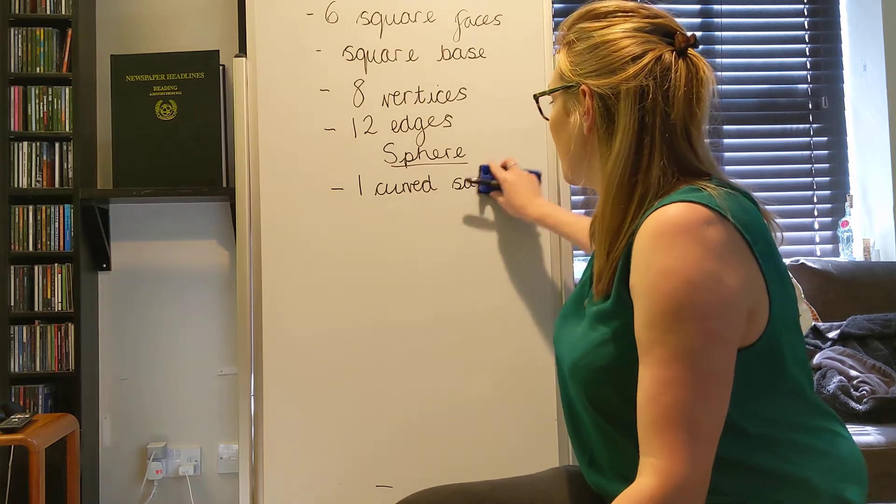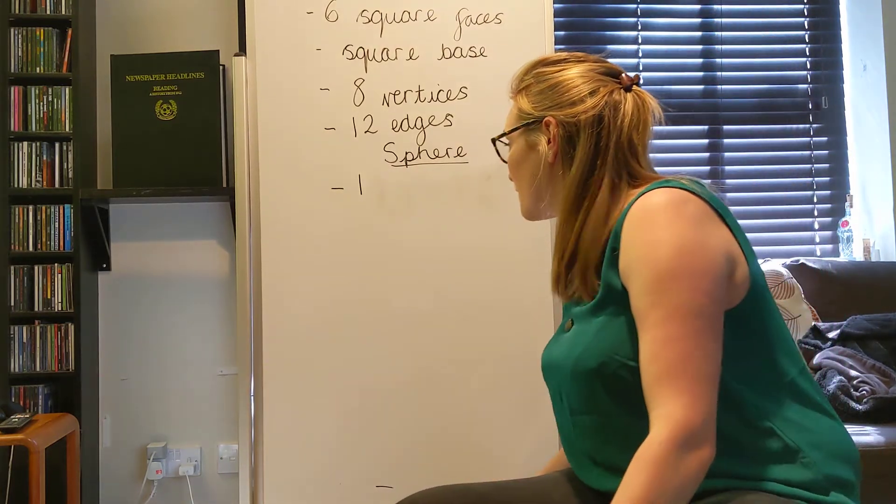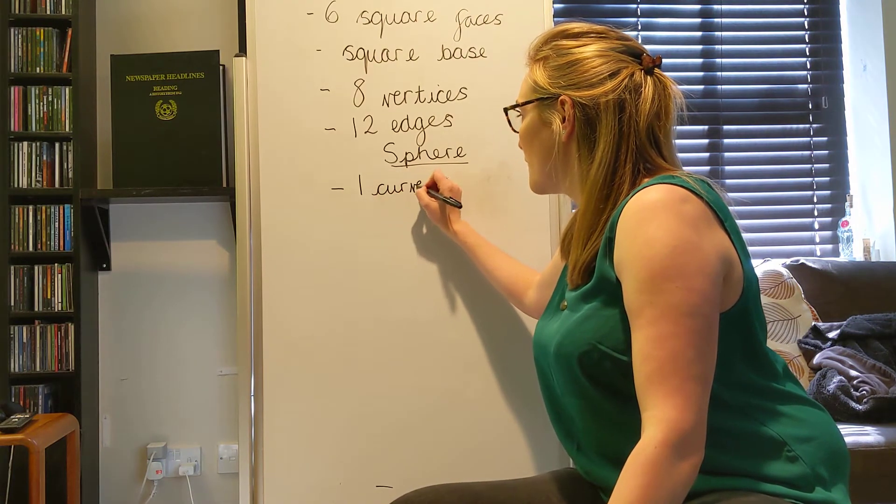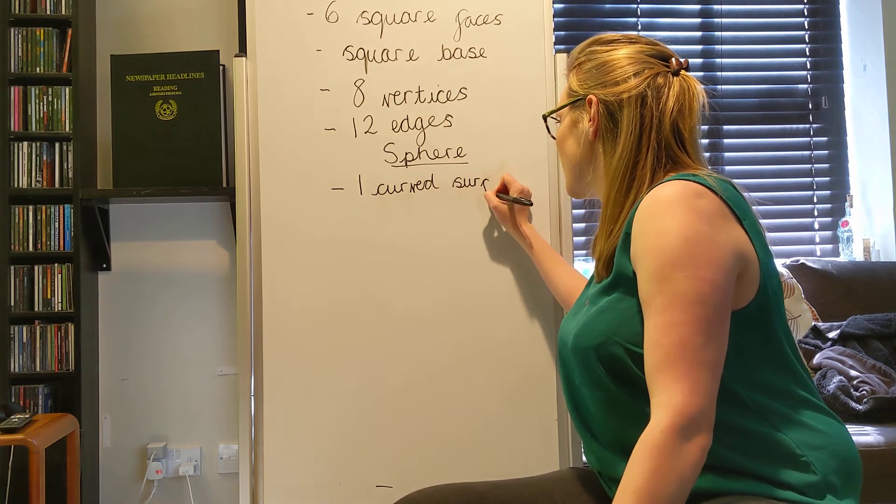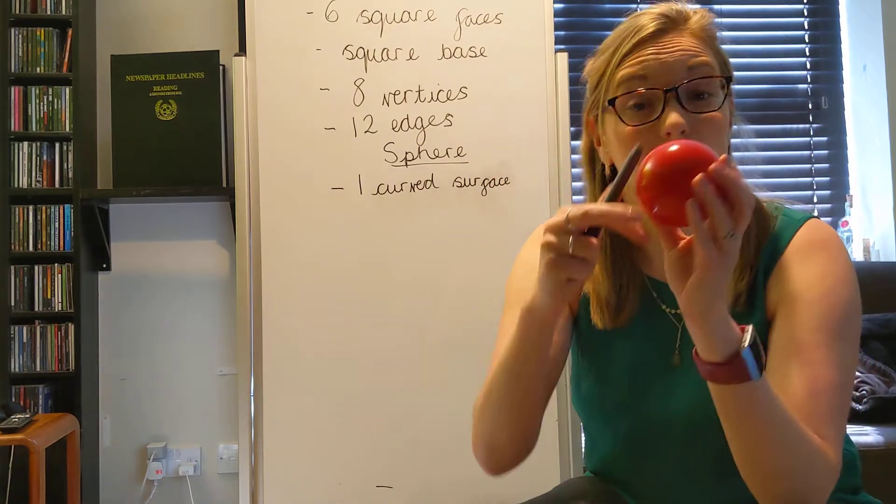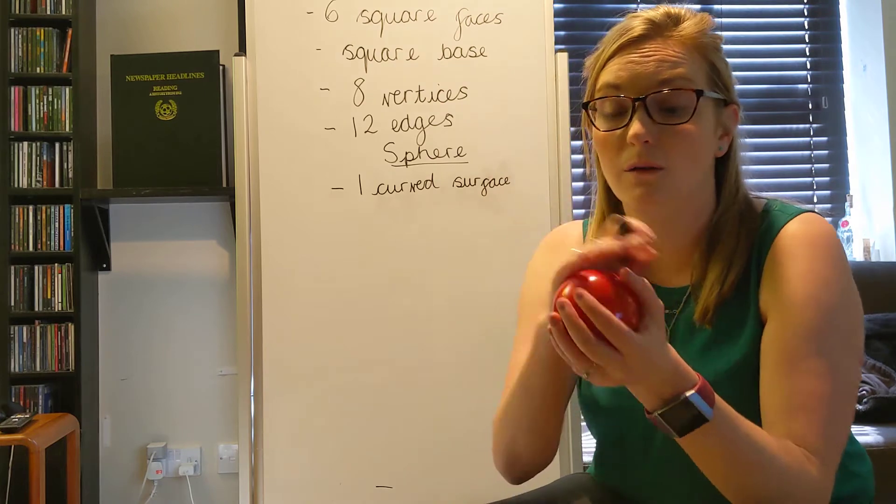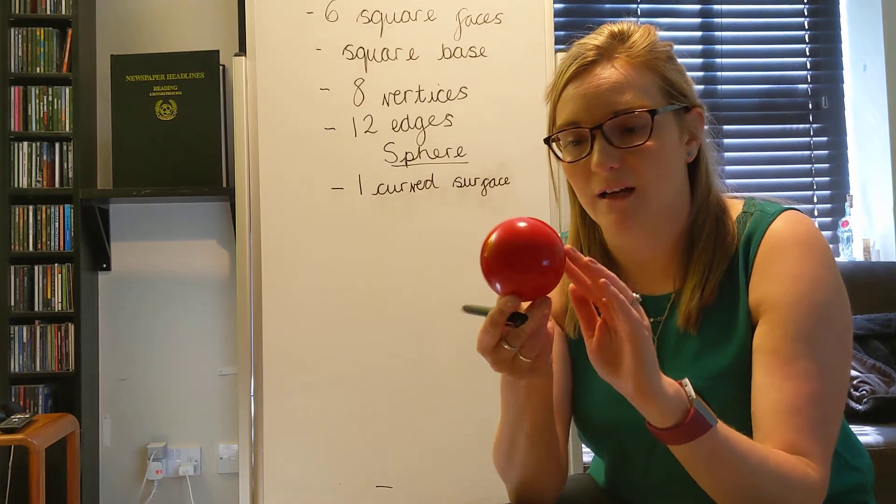One curved surface. Just because I've joined up those letters wrong, I'm just going to write that again. One curved surface. Okay. One curved surface. It's not a face. It's round. There's only one of them, so it's one curved surface.